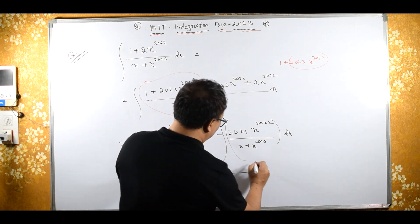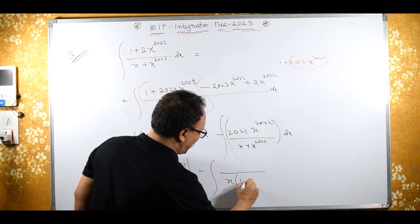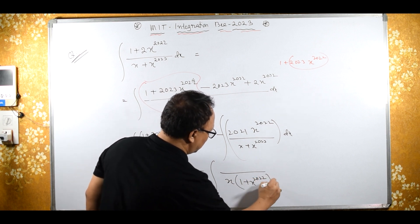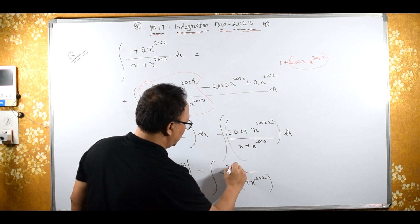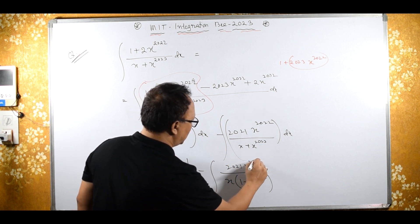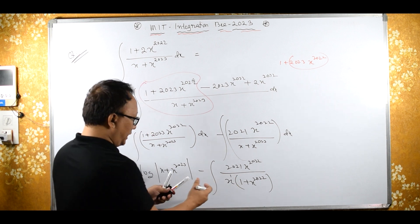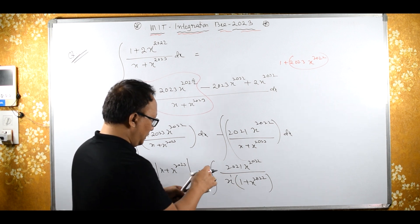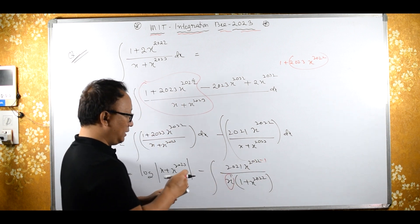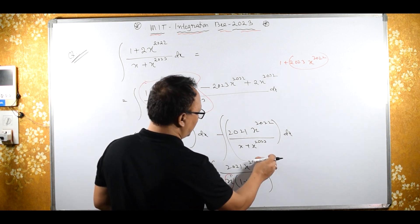Minus integral. Now, from the denominator you can take x common. If I take x common, 1 plus x raised to 2022. Here I will get 2021 x raised to 2022. Now, actually this x raised to 1 — I can bring this up over here, then minus 1, means I will get x raised to 2021. This x goes.